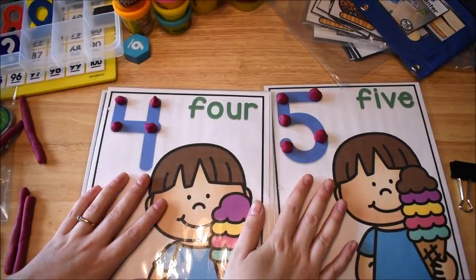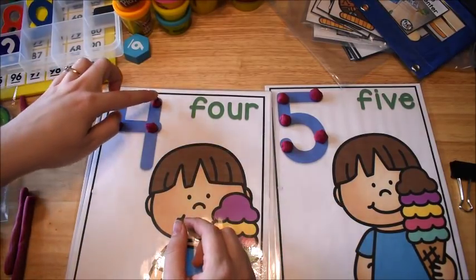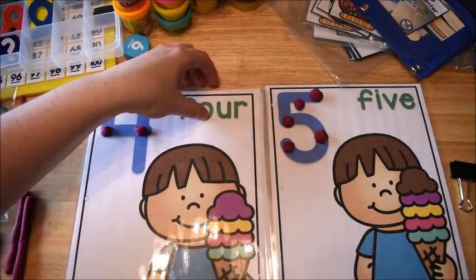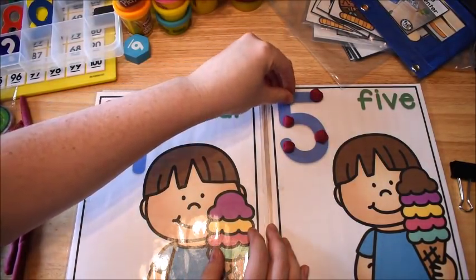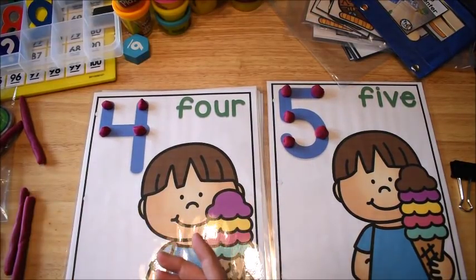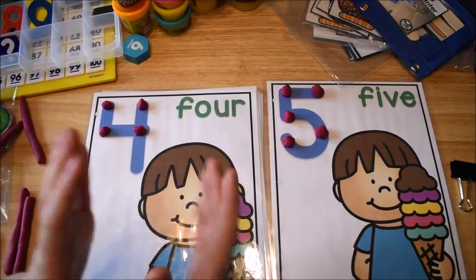So four plus five. No. One, two, three, four, five, six, seven, eight, nine. Excuse me, I don't know how I did that. Okay, so four plus five equals nine. I'm like about to say four plus five equals ten and that would have been really funny.